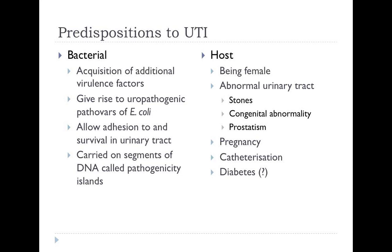There are a number of predispositions to UTI worth thinking about. Being female is a big risk factor, as is having an abnormal urinary tract. Stones are a foreign body that present a nidus for bacteria where the immune system can't clear them. Congenital abnormality — particularly posterior urethral valves in babies, where urine backs up at the ureterovesical junction causing stagnation — and prosthetism in elderly men are also important risk factors.